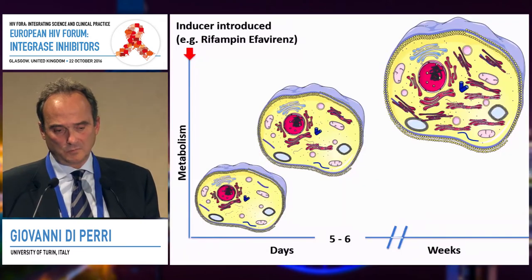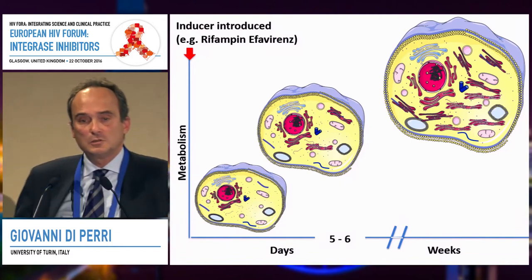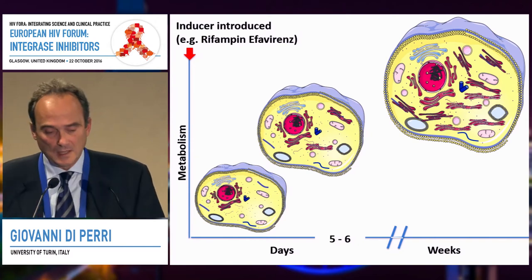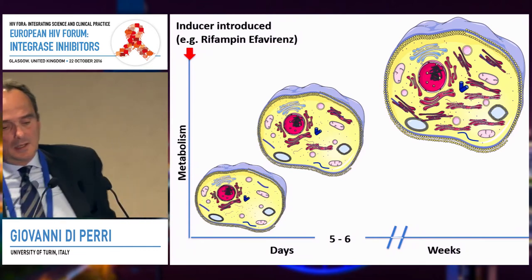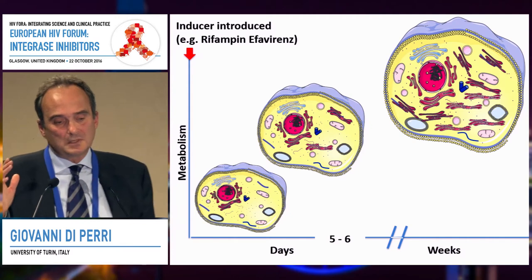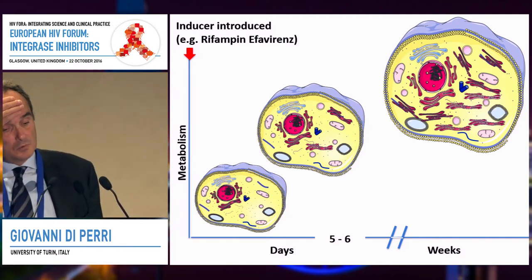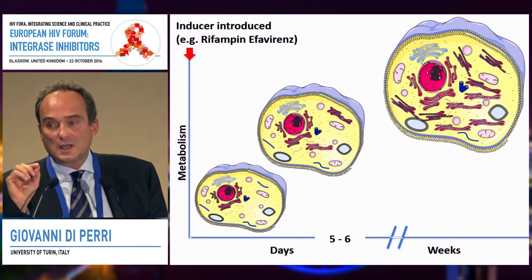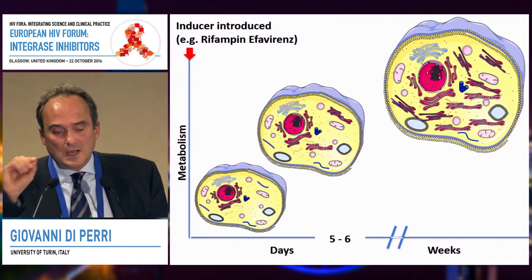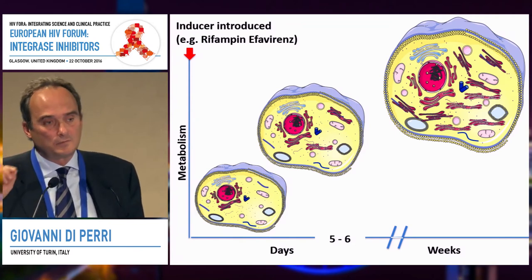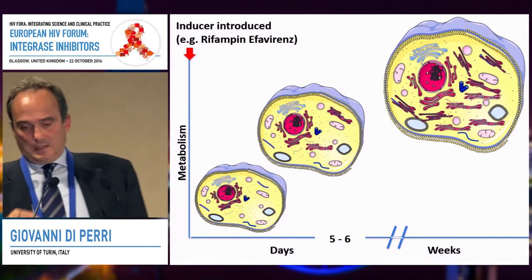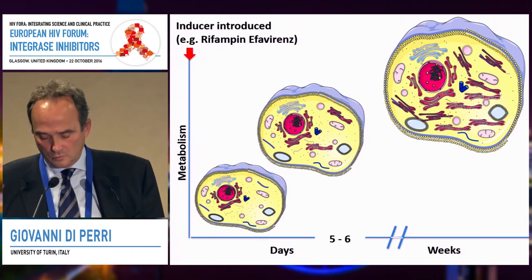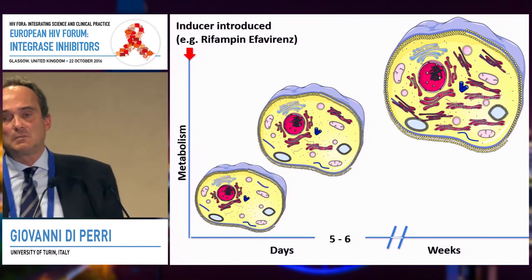On the opposite side, what we have is induction. Induction is not just a decrease of activity — it's an increased activity. However, it's not the mirror image of inhibition. What happens with inducers — the examples we know best are rifampicin and efavirenz — is that in induction you see an increased synthesis of organelles, of endoplasmic reticulum in cells, and it takes a certain time to really determine an increased metabolic activity.